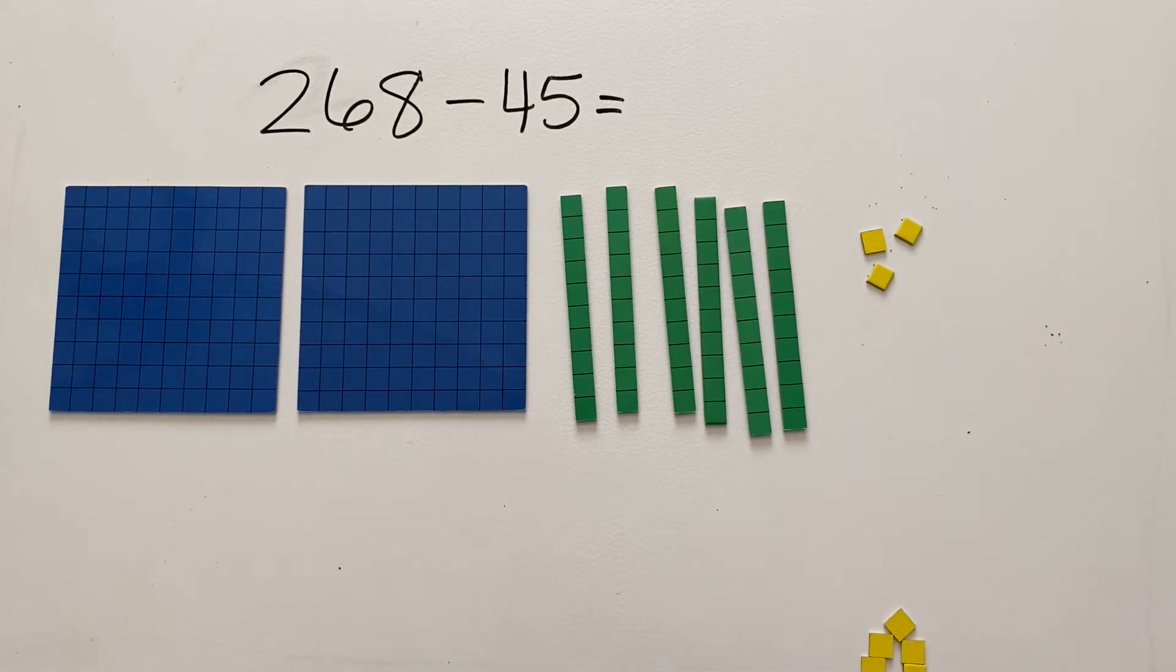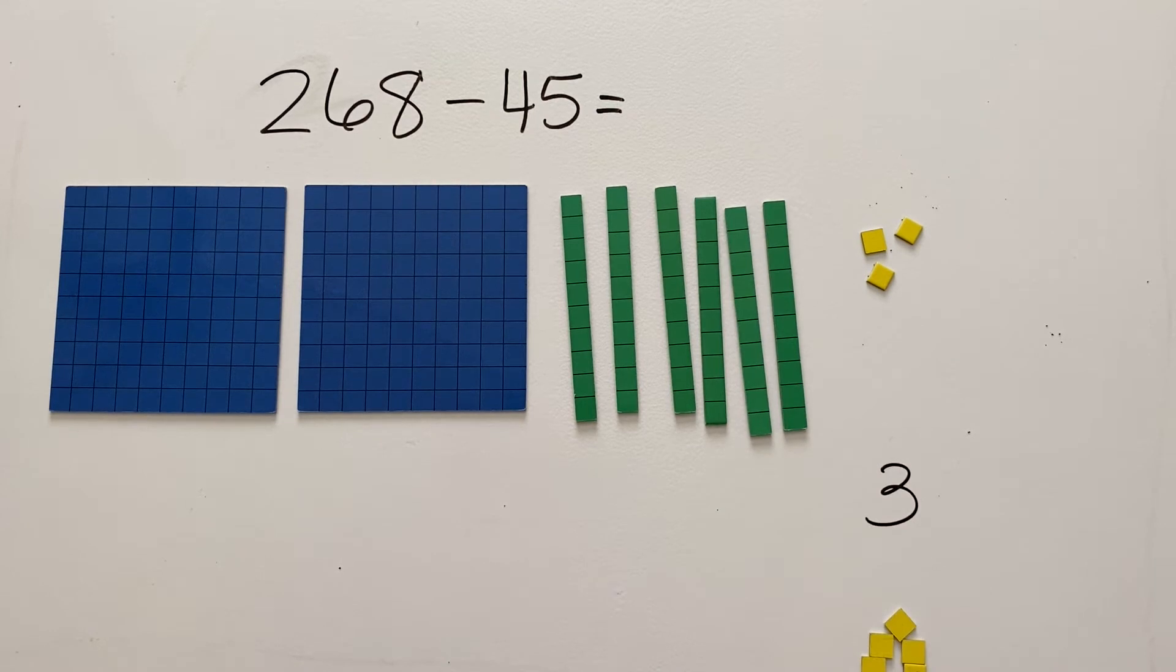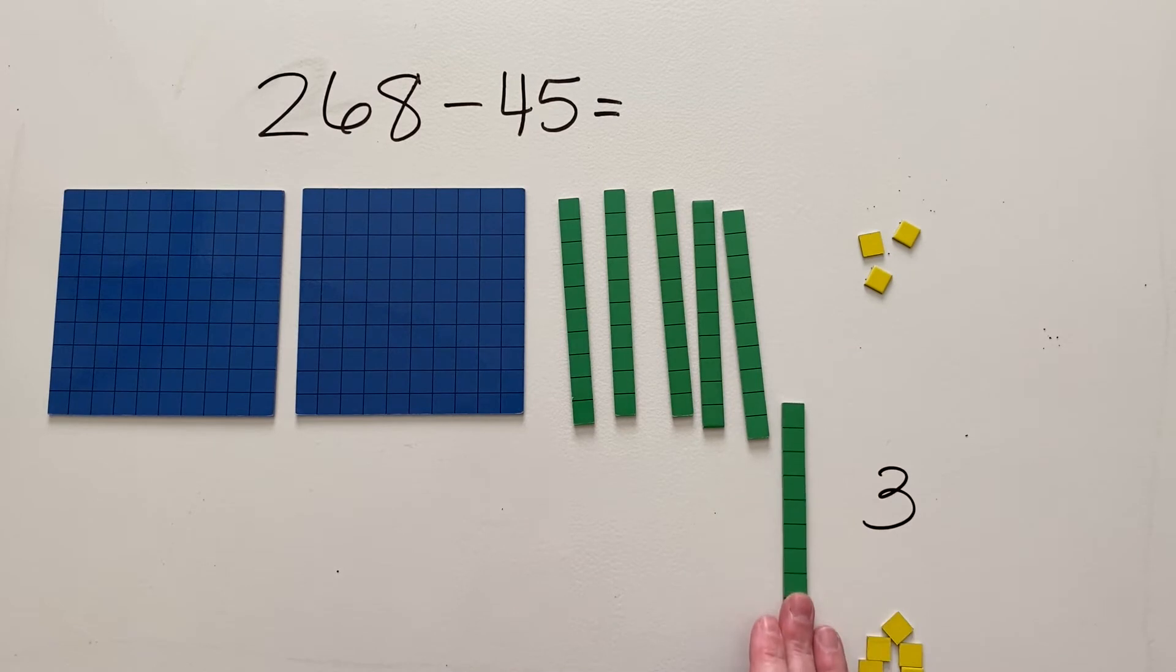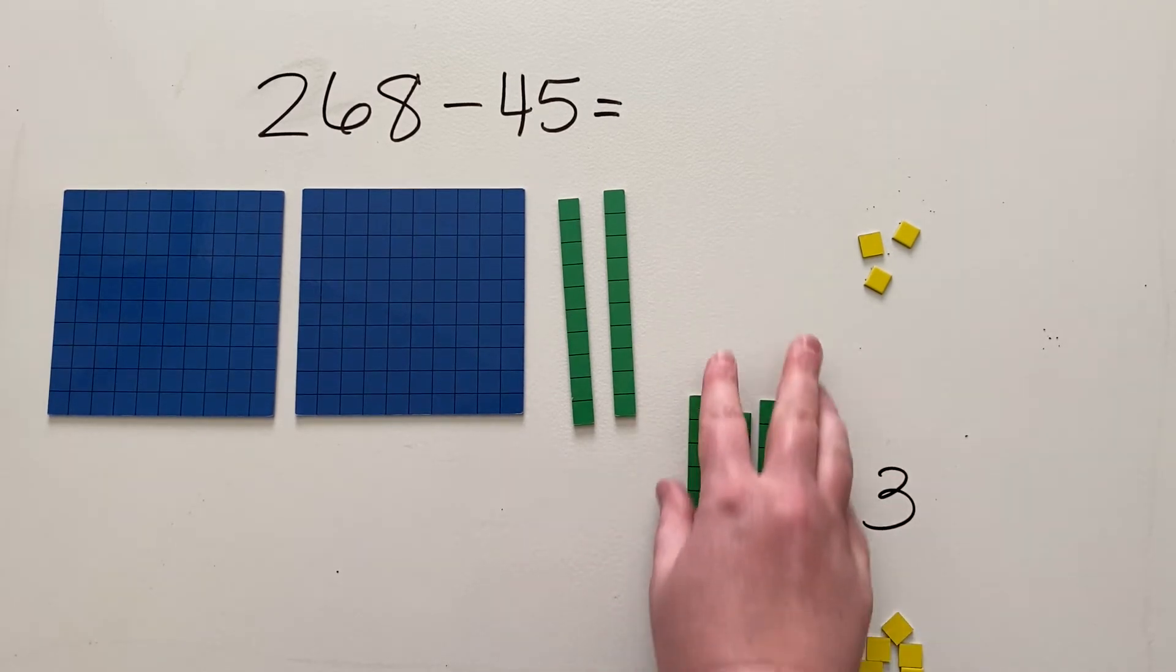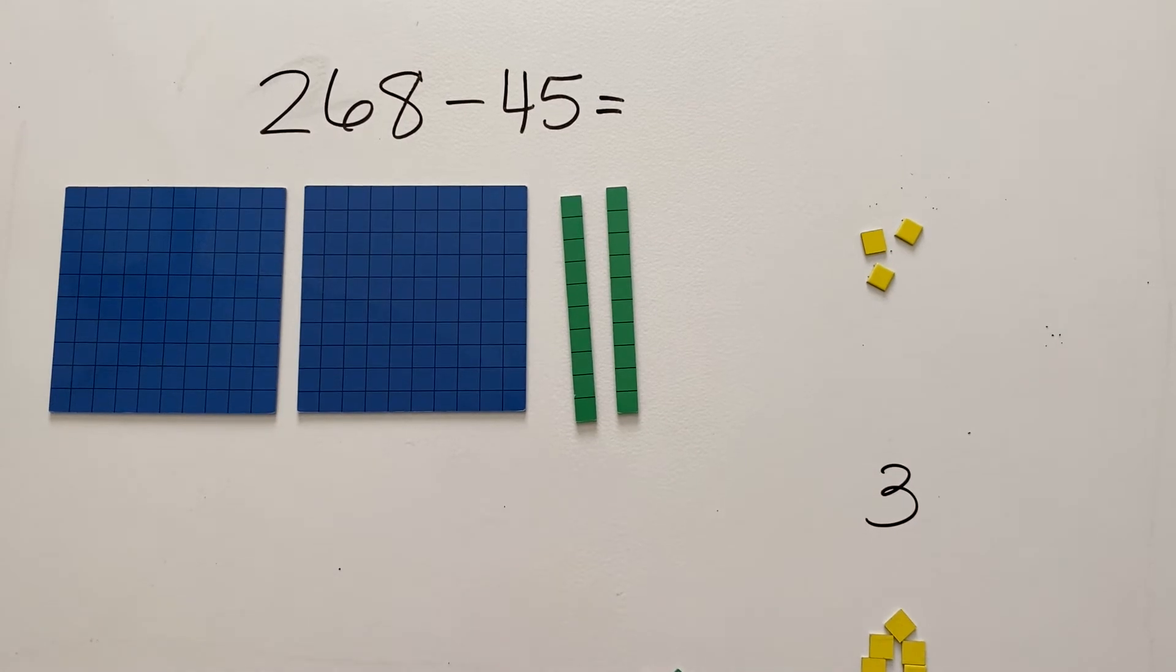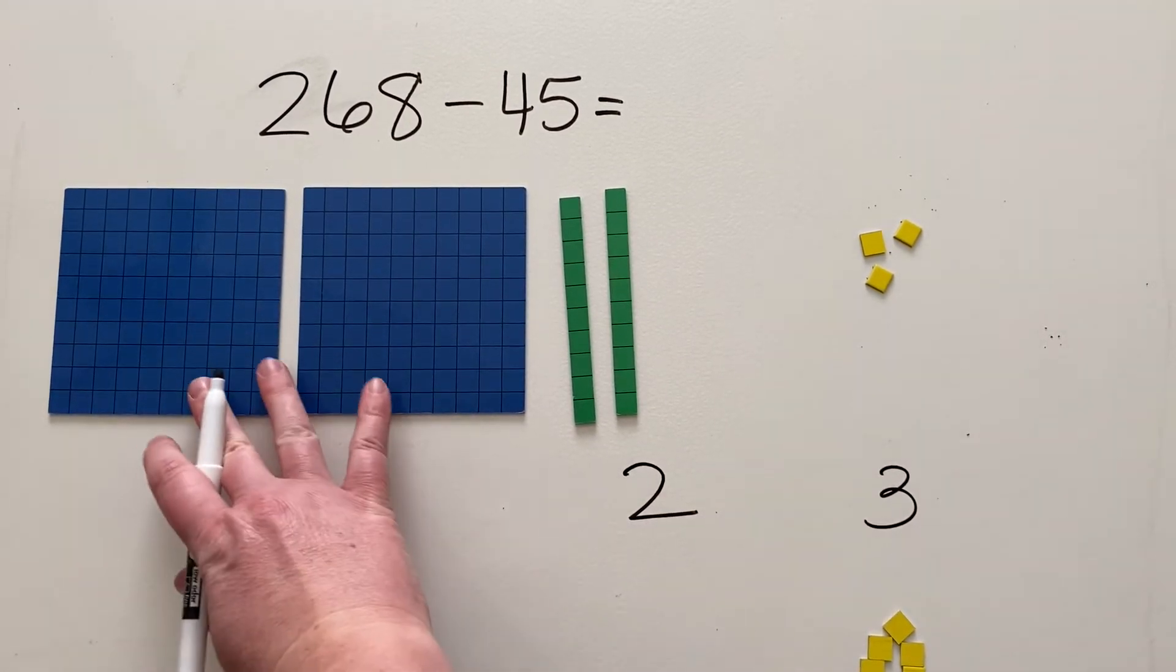That leaves me with just 3 in the ones place. In the tens place I can subtract 4 tens: 1, 2, 3, 4. Now those are gone and that leaves me with 2 tens.